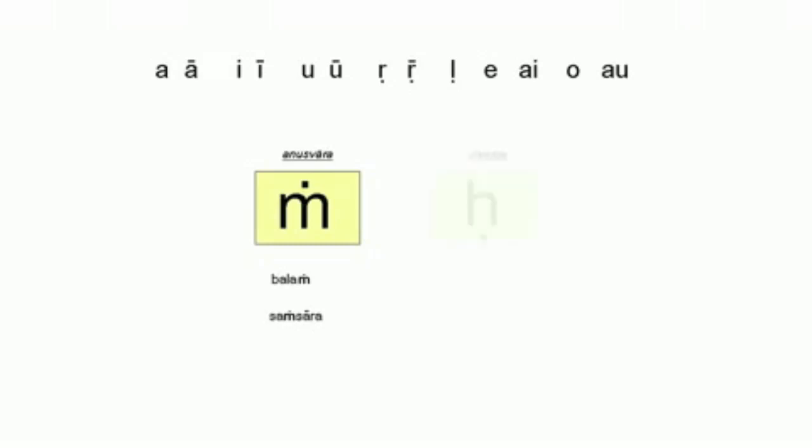The second ornament is called the visarga. And this is simply an aspirate where the breath is expelled in a very short burst along with the preceding vowel sound. Some examples to illustrate this are: Shakti, Kaamah, Ubhayoho. Notice how the visarga always takes on the preceding vowel sound.